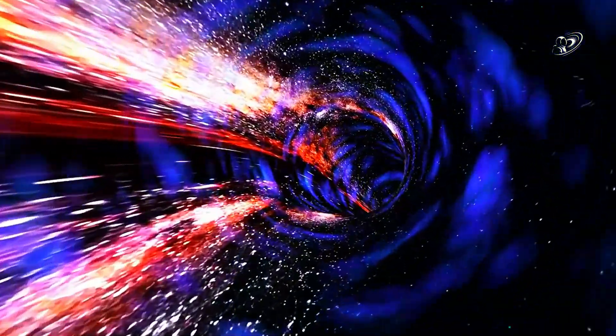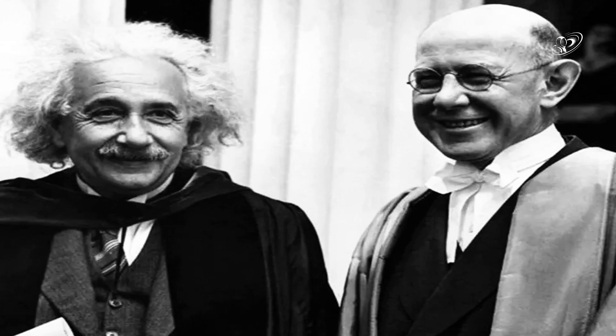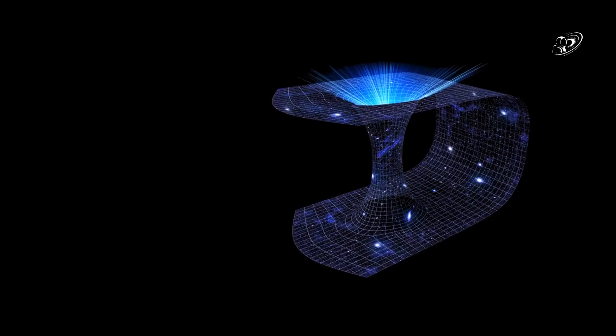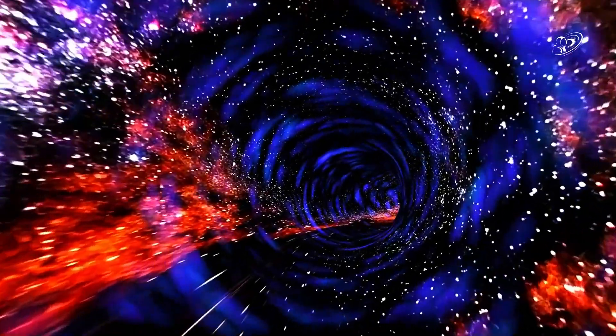These tunnels through the fabric of reality were first seriously proposed in 1935 by physicists Albert Einstein and Nathan Rosen. They theorized what we now call the Einstein-Rosen Bridge, a kind of wormhole.